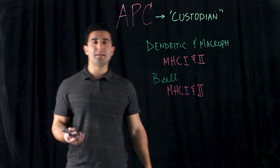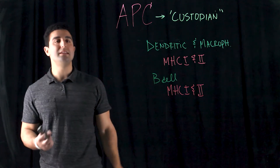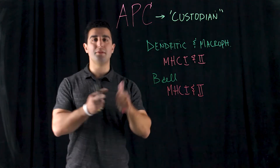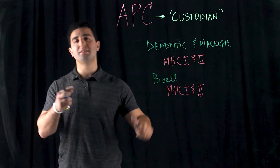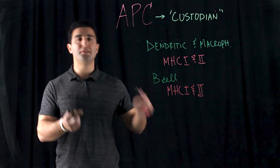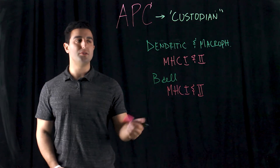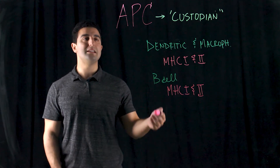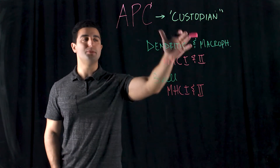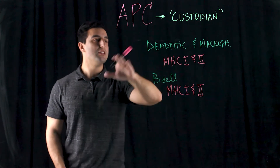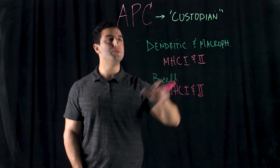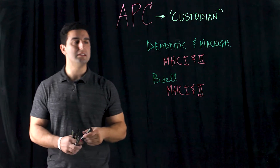Other atypical APCs include, for example, the mast cells, eosinophils, and basophils. These are also another type of atypical antigen-presenting cells, but the most commonly used are the professional ones discussed above.